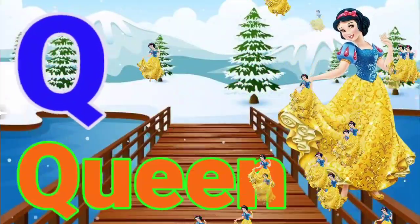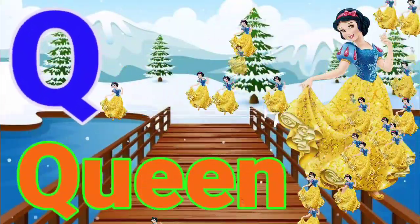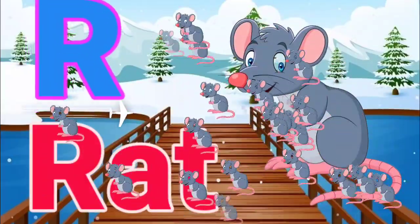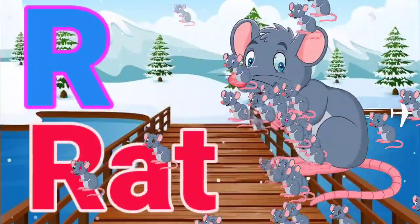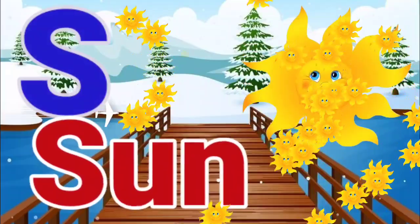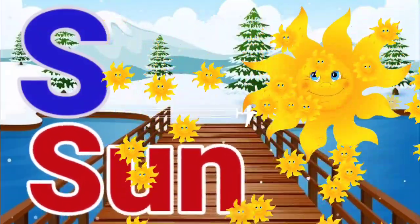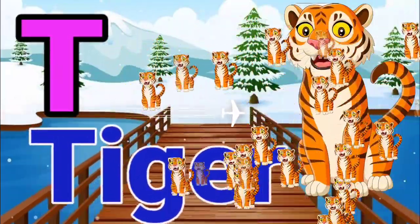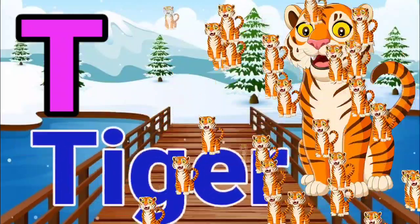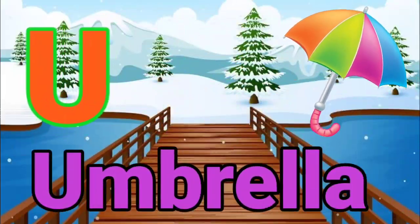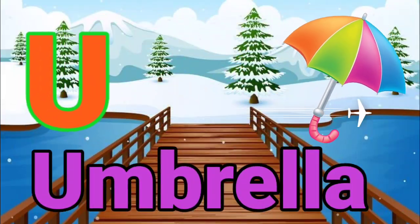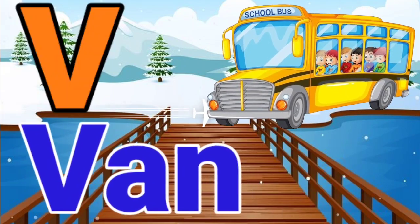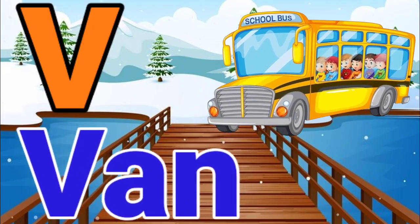Q for queen, R for right, S for sun, T for tiger, U for umbrella, V for van.